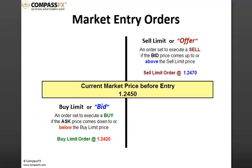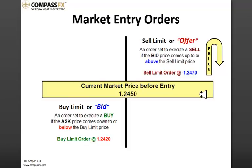The next order is referred to as a sell limit or an offer. In this case, we're looking to sell the market, but we want the market to get up a little bit higher — get a better price — before we sell. We're looking for the market to rise up in price, then turn and fall back down. Current market price is at $124.50; we have a sell limit order or offer at $124.70. We're looking for the market to come up from $124.50, reach $124.70, trigger that order, and then turn and fall back over. These are the two key comments I get every day in my live active trade room as to where bids and offers are in the marketplace.